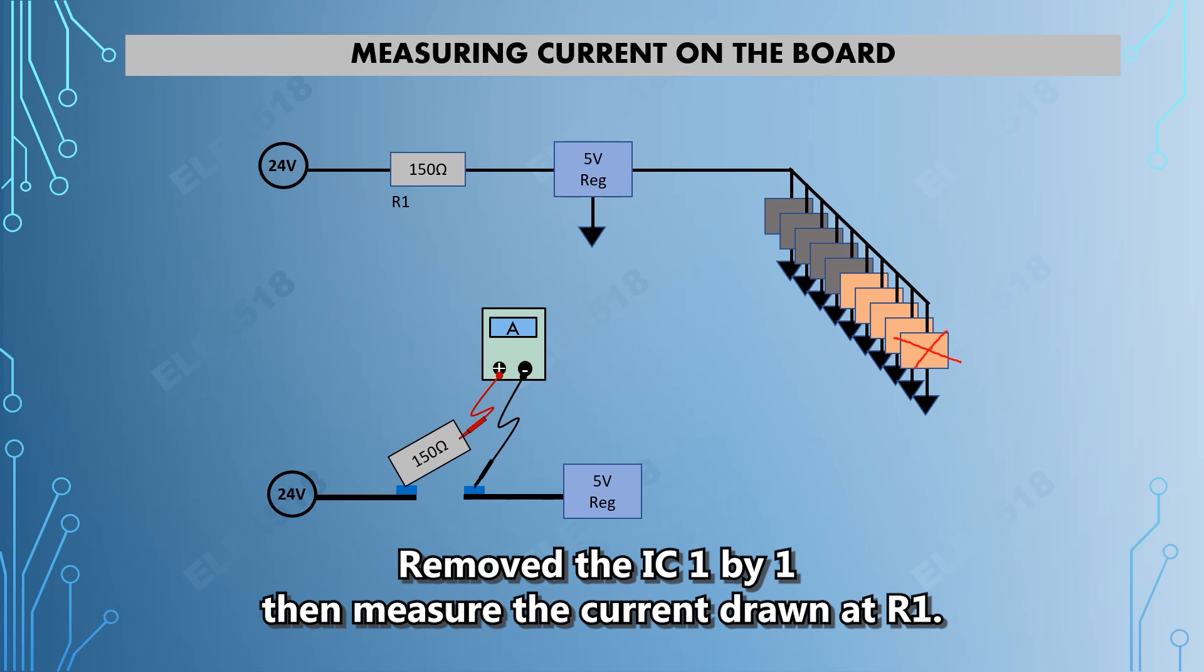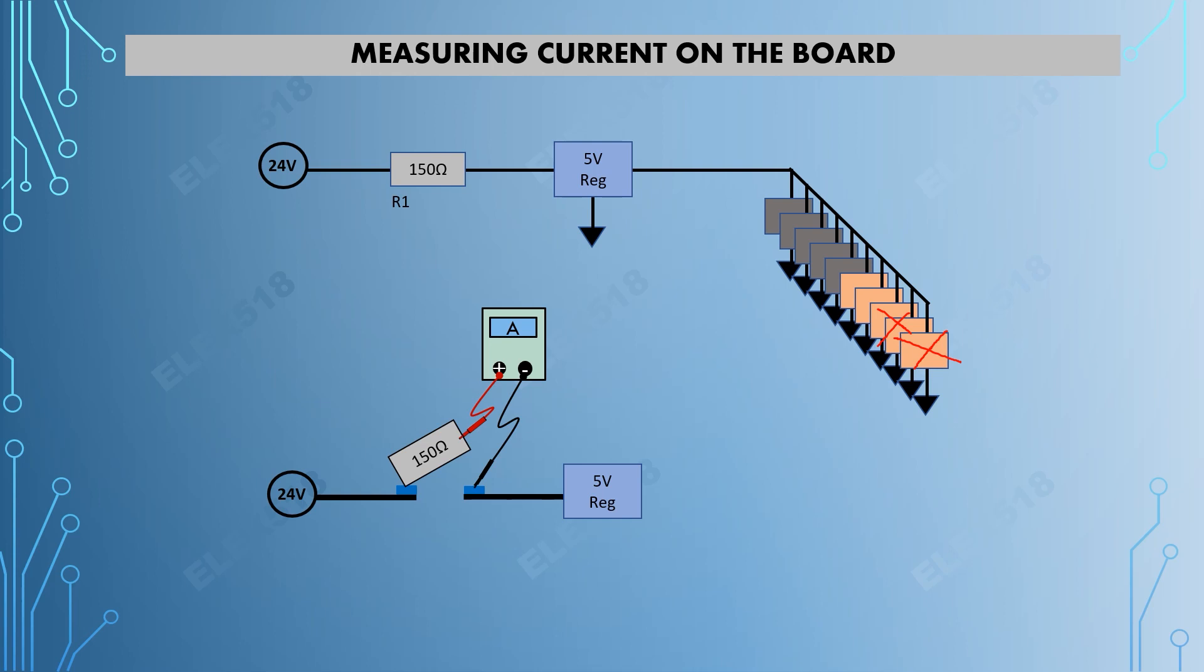So I remove this IC and measure the current, I remove another IC to measure the current, and so on. This is an easy way to find out which IC has caused the high current in the R1 line.